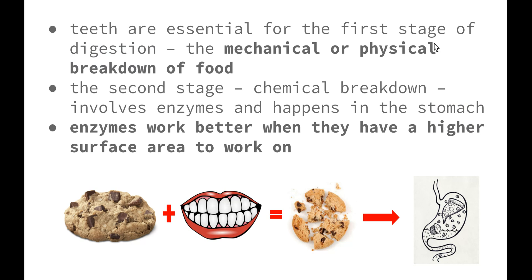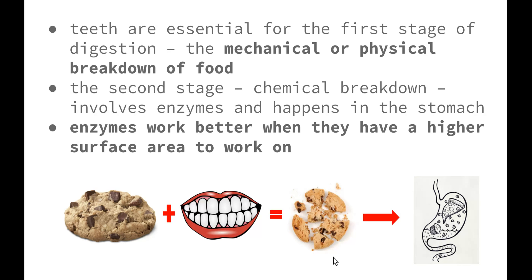Teeth are essential for the first stage of digestion, which is the mechanical or physical breakdown of food. The second stage, known as chemical breakdown, involves enzymes and happens in the stomach. Enzymes are able to work better when they have a higher surface area to work on. So when we put food in our mouth and our teeth break it down, we increase the surface area, making it much easier for chemical digestion to take place.